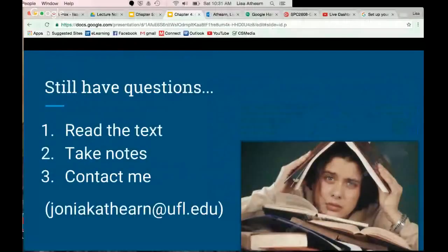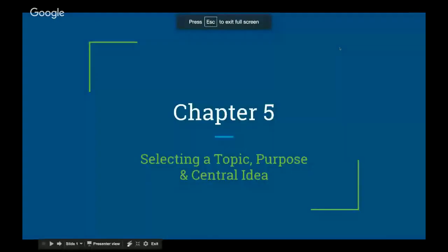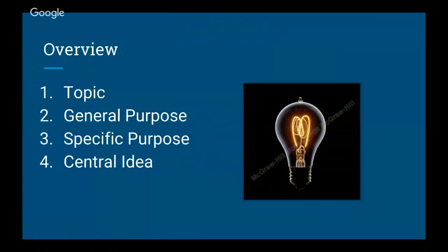Now I want to switch over to chapter five. Chapter five talks about selecting a topic, a purpose, and a central idea. There are two different kinds of purposes we are going to talk about: a general purpose and a specific purpose. We'll cover choosing a topic, picking a general purpose, choosing a specific purpose, and creating your central idea. It's really imperative that you understand the distinction between all four of these before moving on in the course.